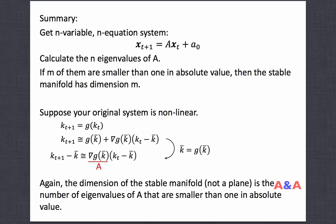Let's quickly summarize. Given an n-variable n-equation linear system — if it is not first-order, you need variable stacking — calculate the n eigenvalues of the coefficient matrix A. If m of the eigenvalues are smaller than 1 in absolute value, the stable manifold has dimension m.